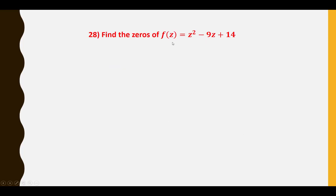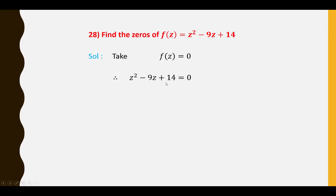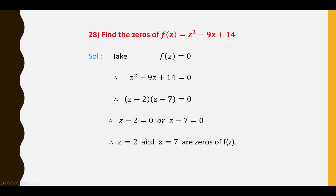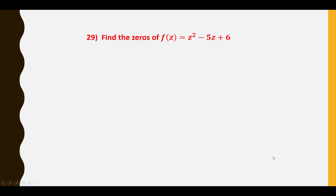Twenty-eighth question: Find the zeros of F(Z) = Z² − 9Z + 14. Setting F(Z) = 0: Z² − 9Z + 14 = 0, factoring gives (Z − 7)(Z − 2) = 0. So Z = 2 and Z = 7 are zeros of F(Z).